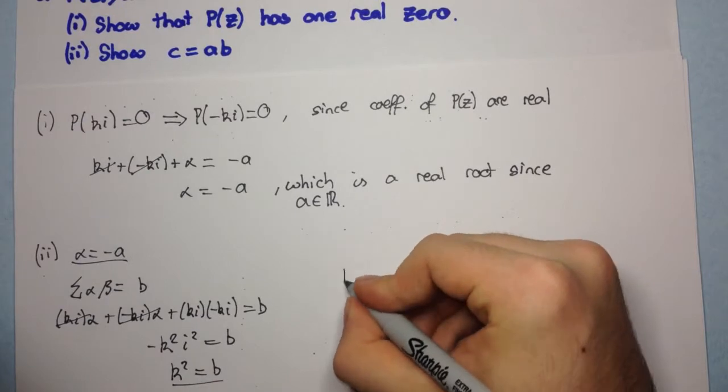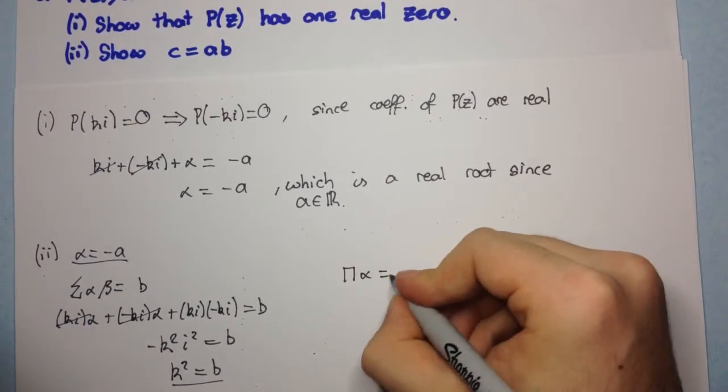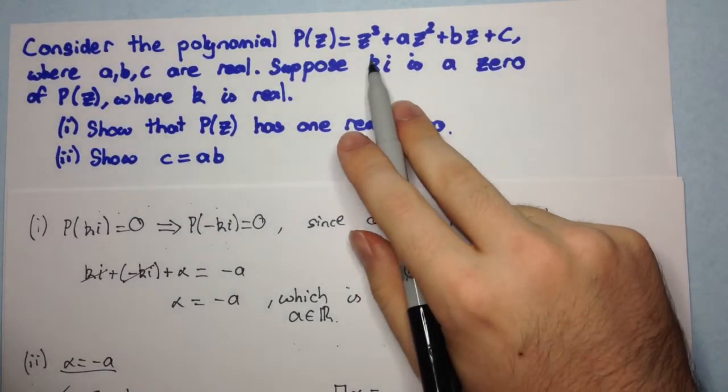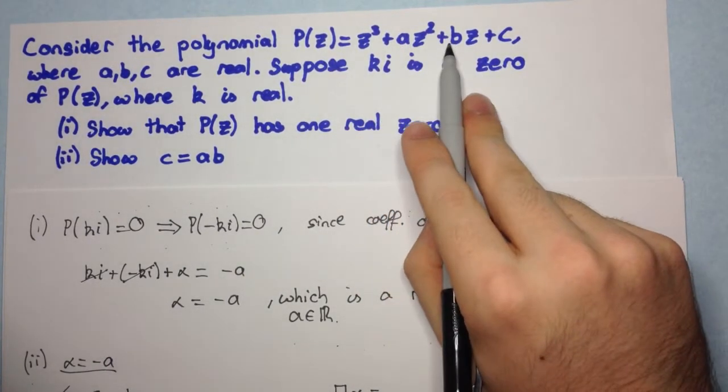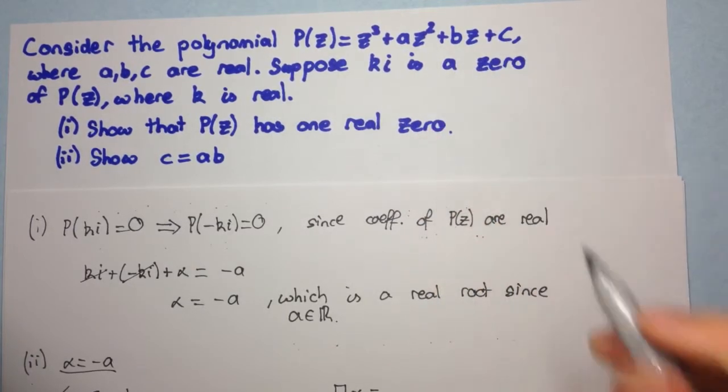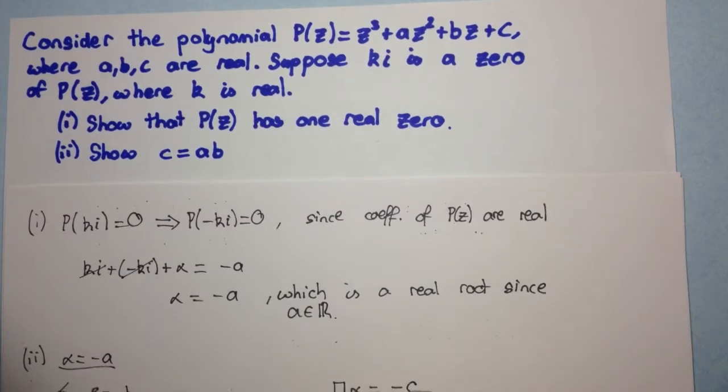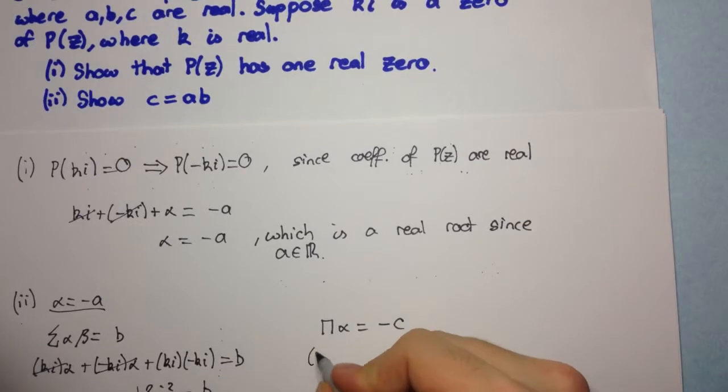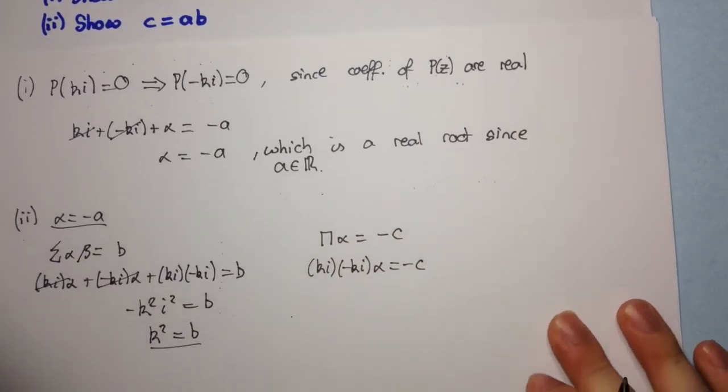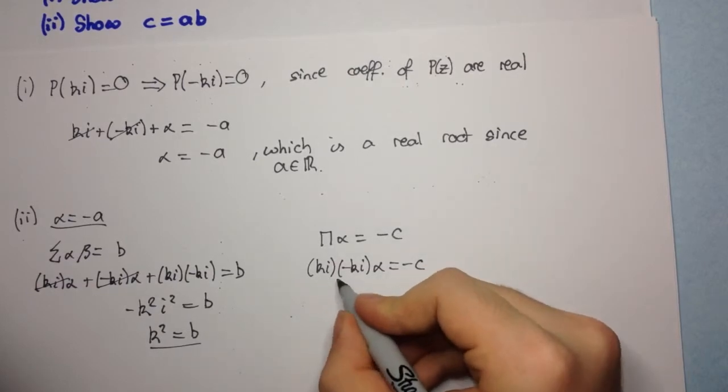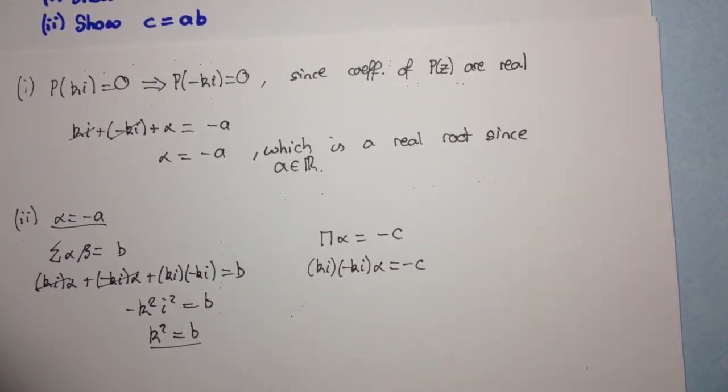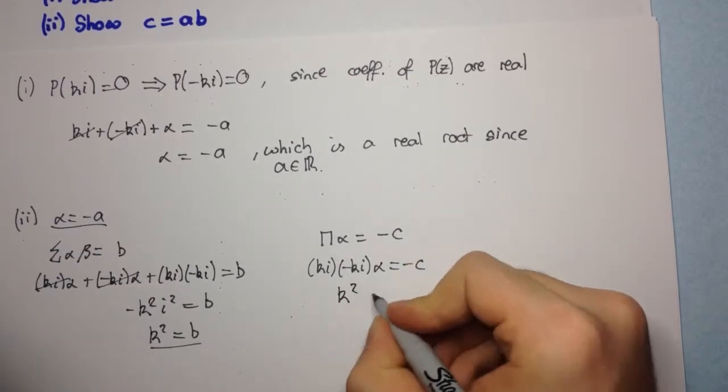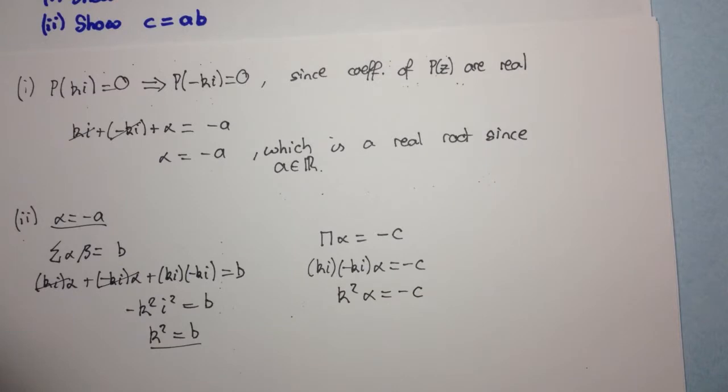Okay, now let's also get the product of roots. So, the product of roots is, now if we look back up to the polynomial, we have minus A plus B. Now, we're going to have a minus C. So, remember, these sides alternate. So, we're going to have minus C divided by one, just minus C. And, the product of the roots is Ki times minus Ki times Alpha is equal to minus C. Okay, so now we have minus K squared, I squared, which is a positive K squared, times Alpha is equal to minus C.